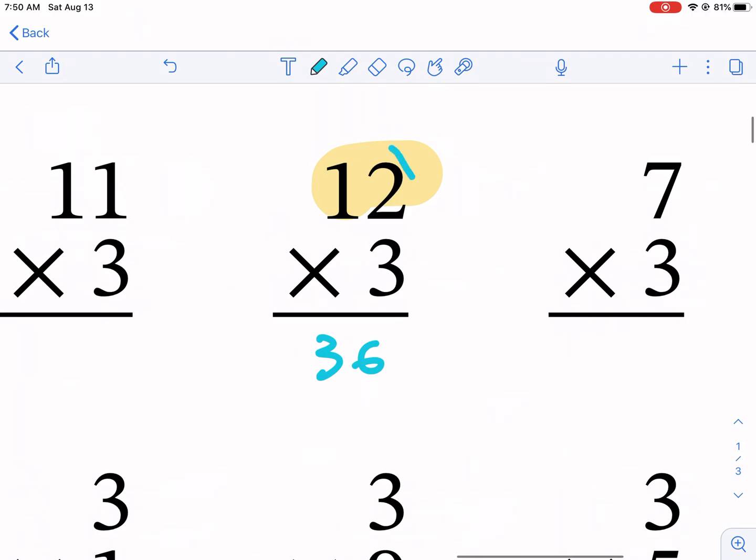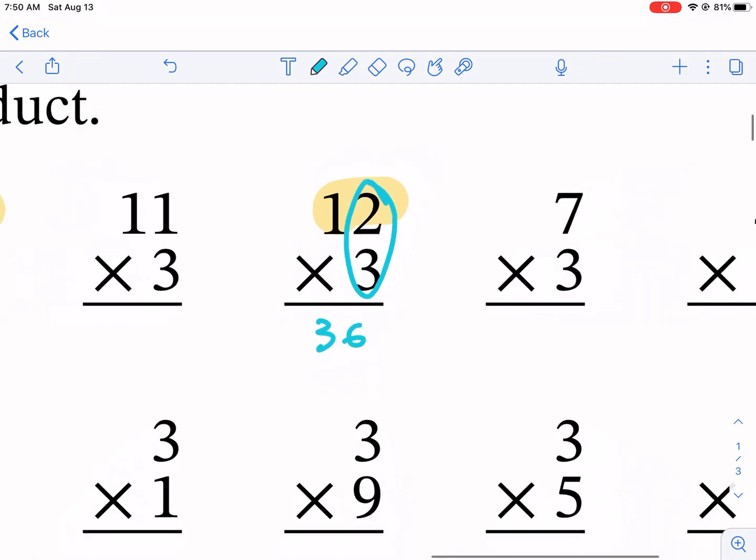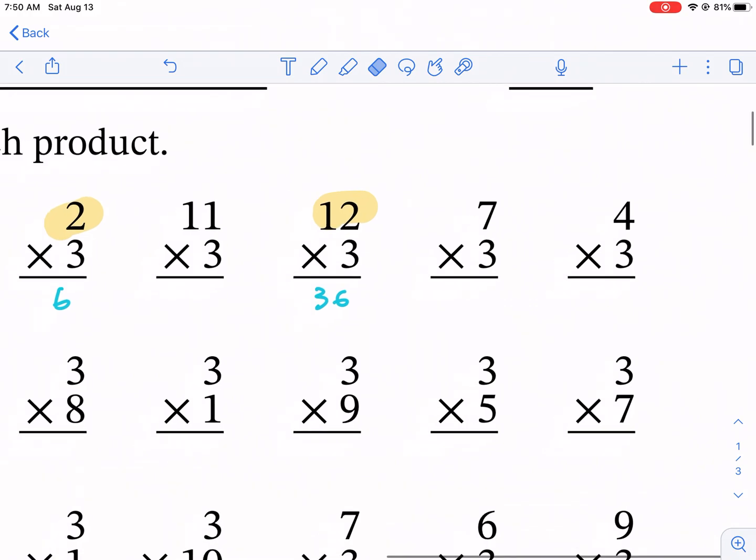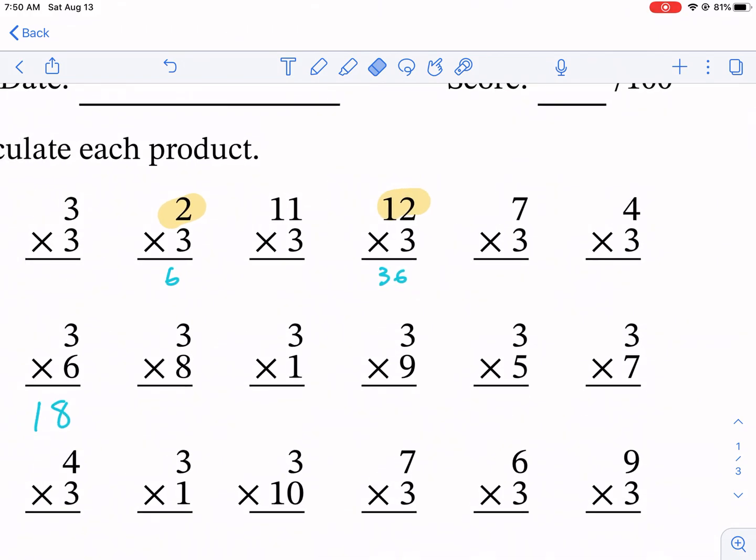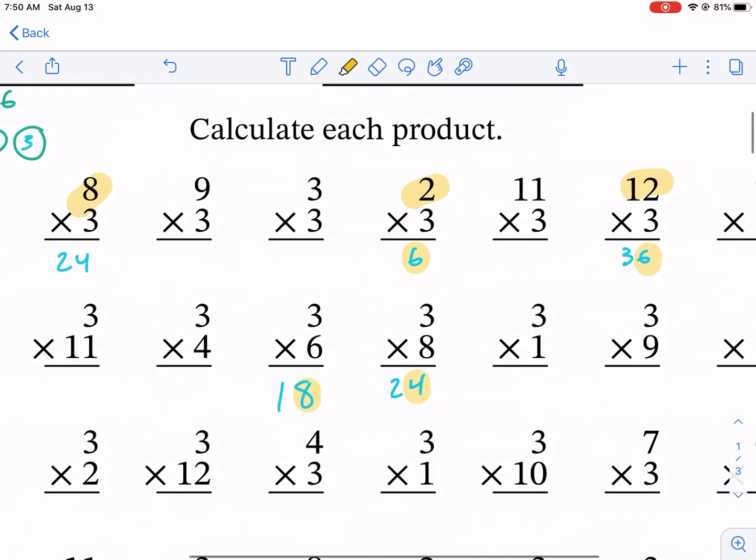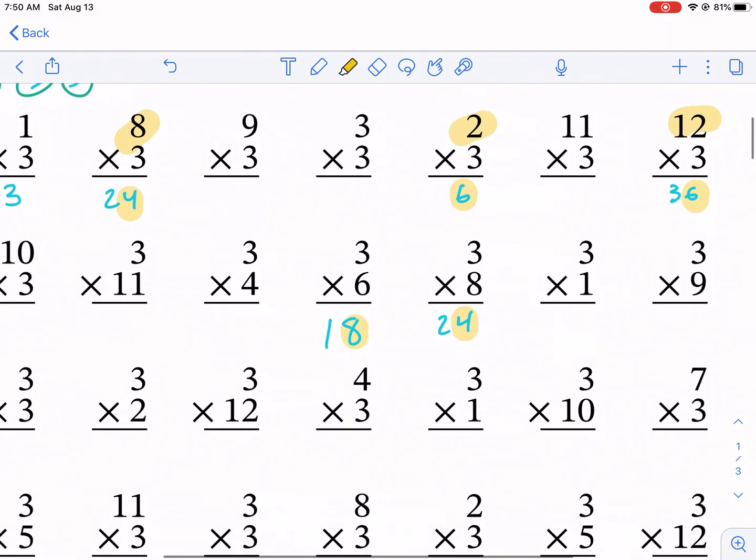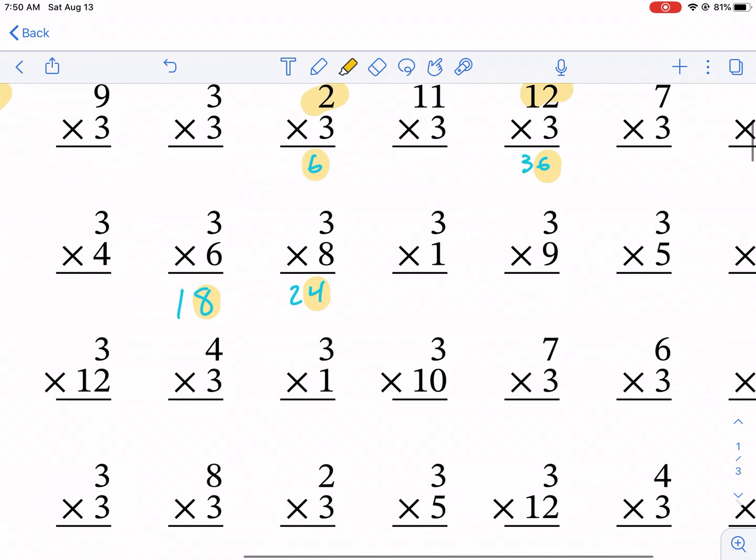And for this one, if we do 3 times 2, that's 6 right there, we write that answer there, and then 3 times 1 is 3, that's where we get 36. So it's really not that bad in terms of multiplying by two-digit numbers. But anytime we multiply by an even number, the answer is also going to be even. So notice here the final number in the ones place is also even. These are all even numbers. 2, 4, 6, 8, 0, those are all even numbers.